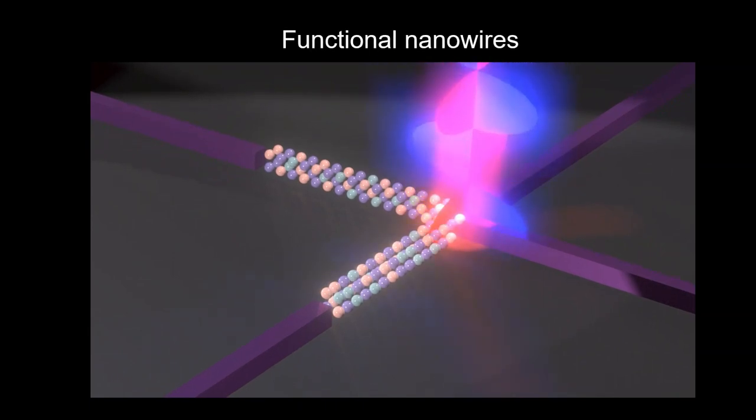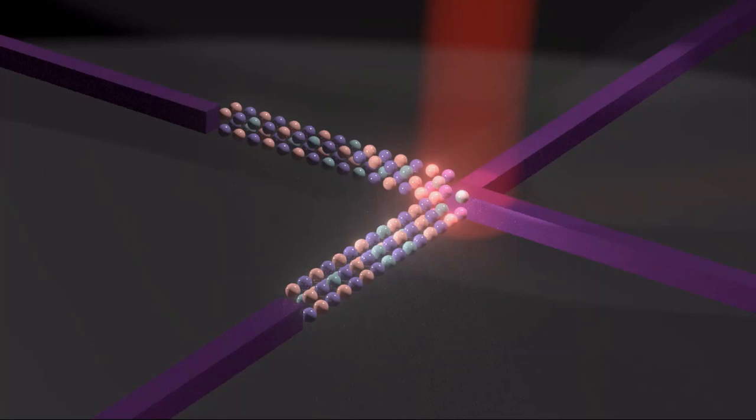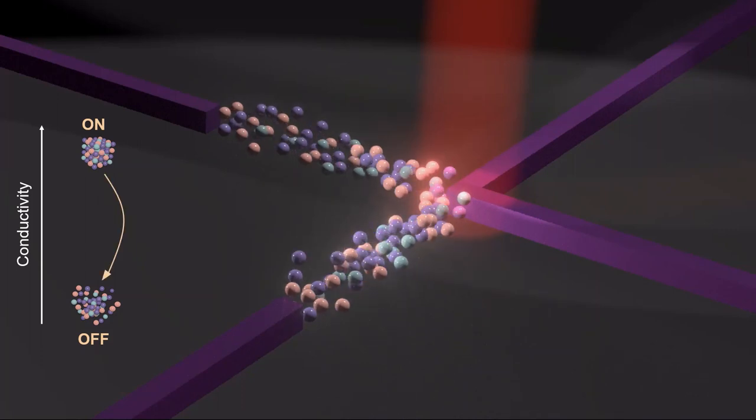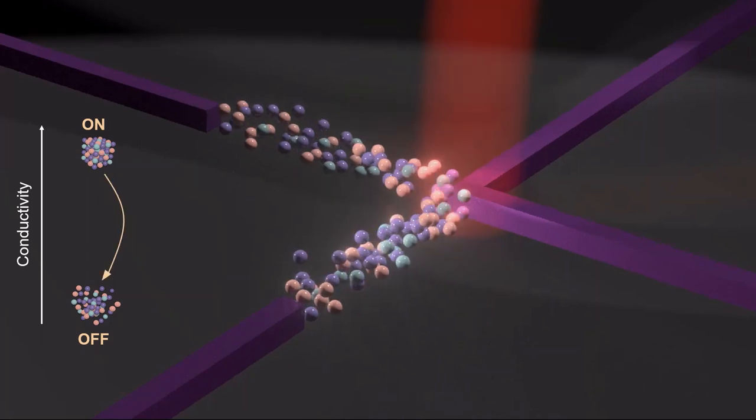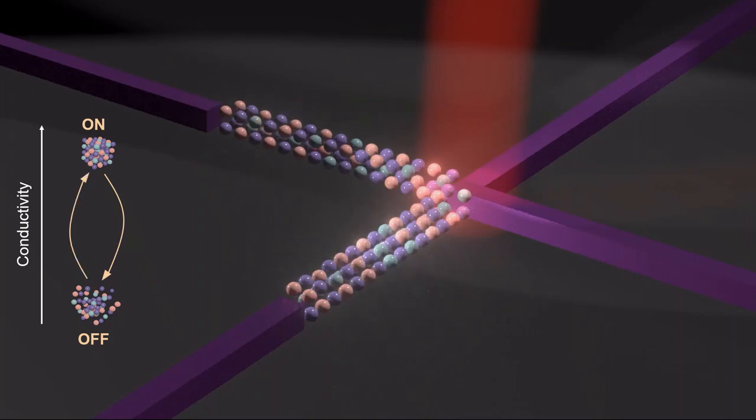Our functional nanowire consists of a glassy material which has two different solid states. Each state represents on and off mode of a device that can be programmed by optical pulses. As optical pulses are illuminated, the nanowire switches to off state, and another pulse can return it back to on state by changing the material property.